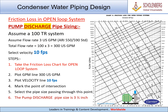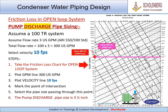Steps: 1. Take the friction loss chart for open loop system. 2. Plot GPM line at 300 USGPM. 3. Plot velocity line at 10 FPS. 4. Mark the point of intersection.